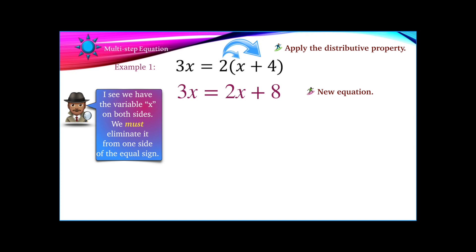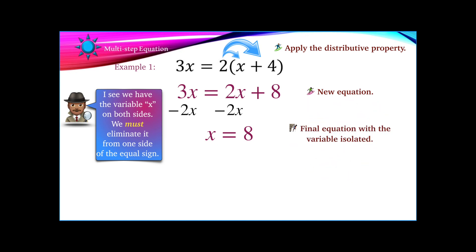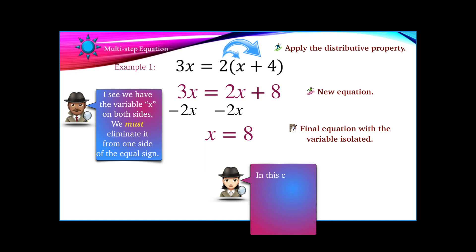We must eliminate the variable from one side. We could subtract 3x or we could subtract 2x — that is really up to you. In this case, we chose to subtract the 2x from both sides, and our new equation becomes just 1x equals 8. That is the answer. Just a couple of steps to find the answer in this case.